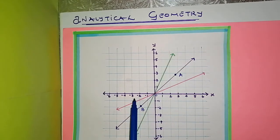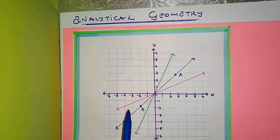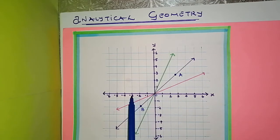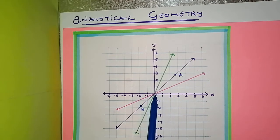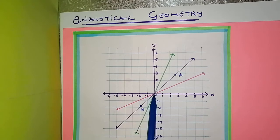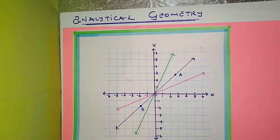Let's say for example they ask you to find the coordinates of the midpoint between negative 3 and 3. We know that from negative 3 to the origin and from the origin to 3 is an equidistant length, so the coordinates of the midpoint will be (0, 0) — right there at the origin.